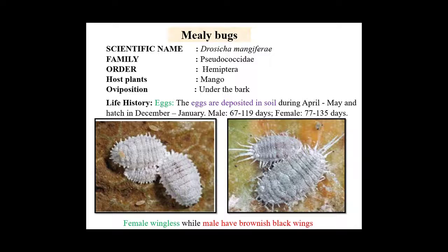The next pest of mango is mealybug. The scientific name is Drosicha mangiferae and it belongs to family Monophlebidae and order Hemiptera. It is also a monophagous pest of mango. Eggs are laid under the bark and deposited in the soil during April–May, hatching in December–January. Male completes life cycle in 60 to 119 days, female in 77 to 135 days. Female is wingless while males have brownish-black wings.